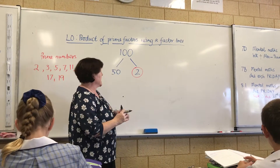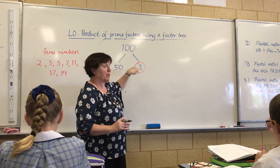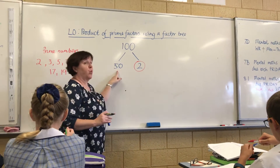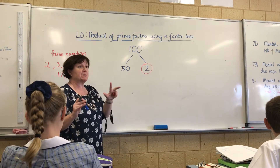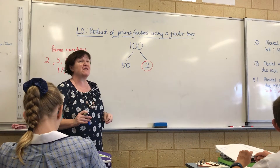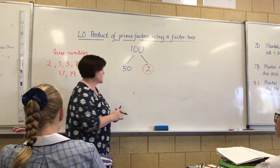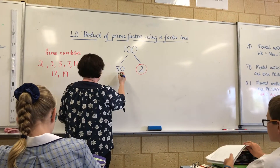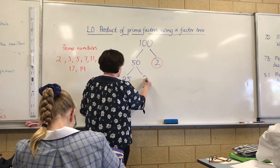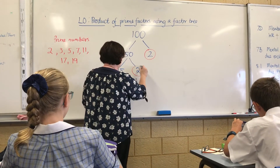When you've circled the prime number, that branch is finished. Now I need another multiplication sum whose answer is 50. The answer is 25 times 2 — well done. So we do two branches again: 25 times 2. Now, 2 is a prime, so we circle it. That branch is finished.